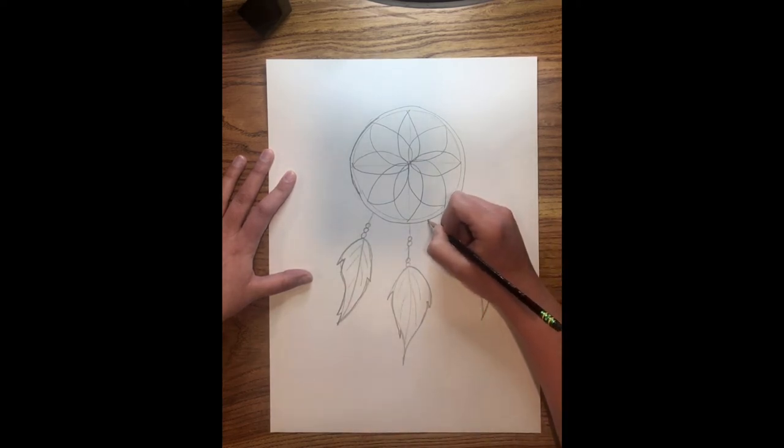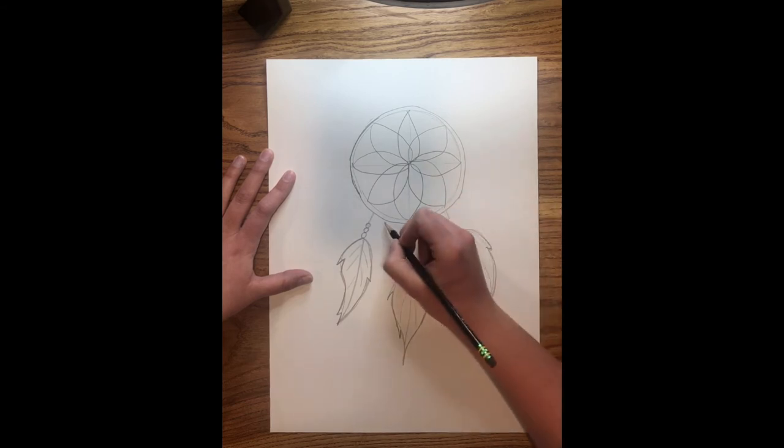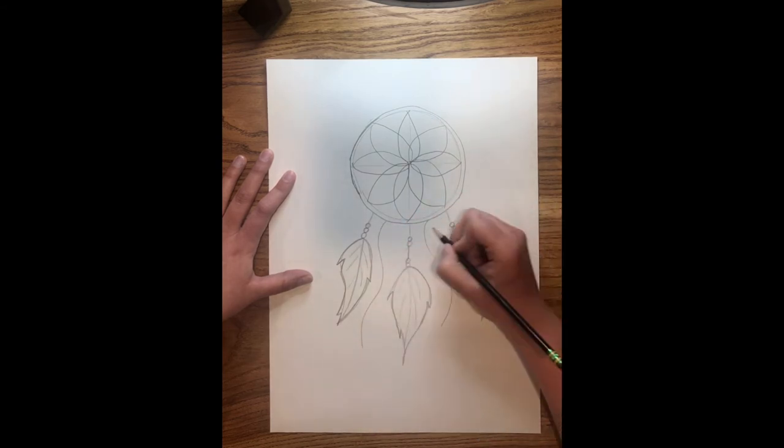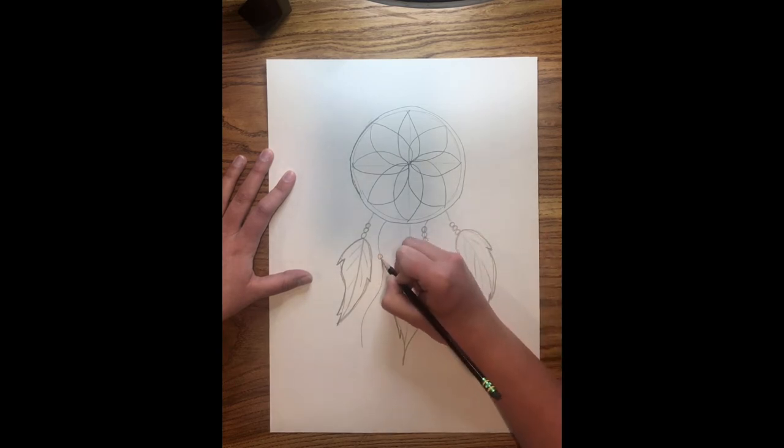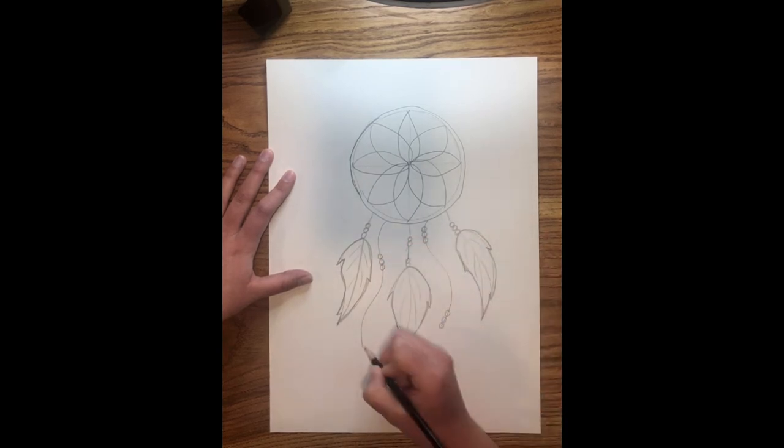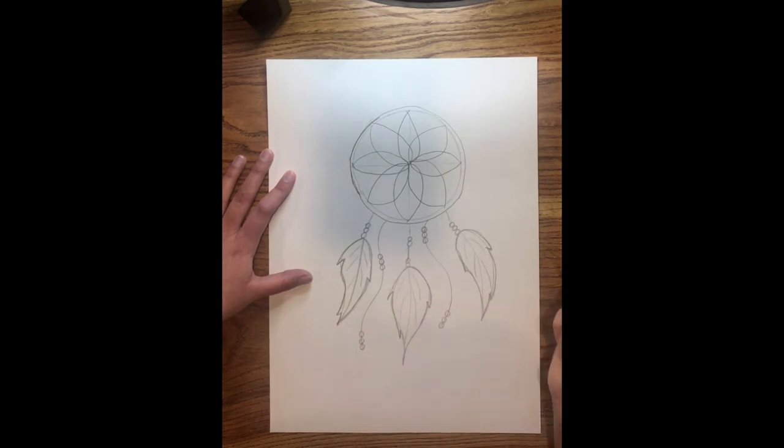I'm going to add a little bit more detail here. I'm going to add some more beads. So I'm just going to make some squiggle lines here between my feathers. And I'm going to add some more beads on this string that I added. And I don't really want them to be even. I'm going to space mine out a little bit just to make it look a little bit more interesting.